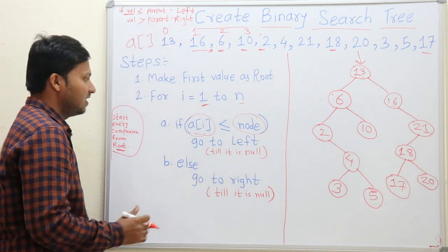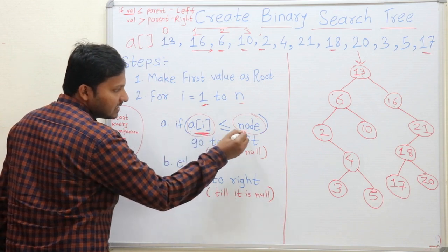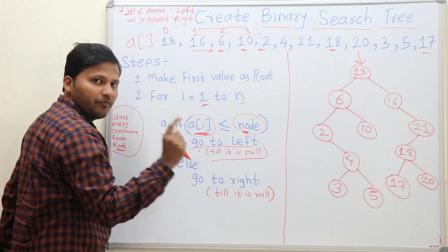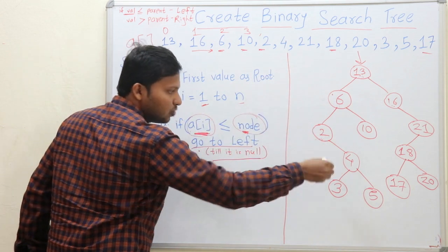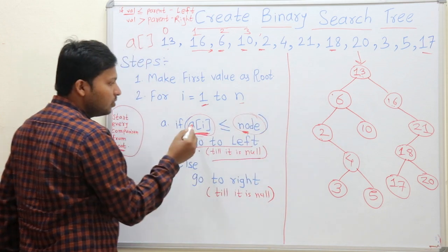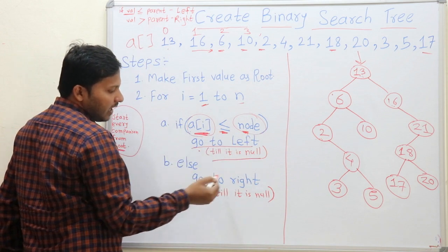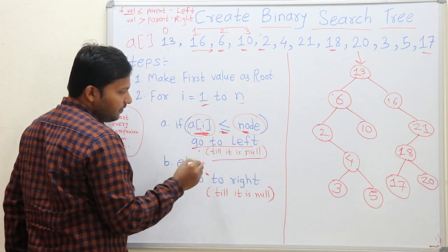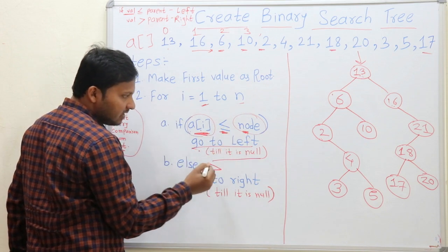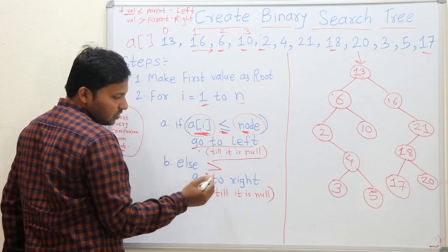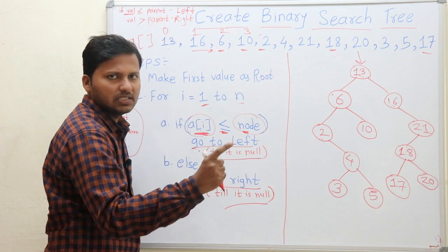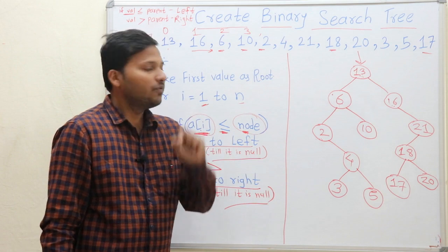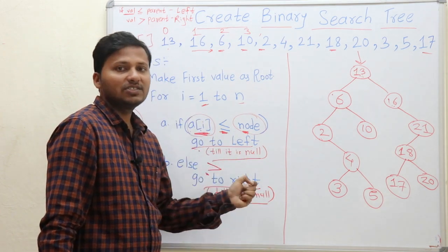This is how we make a binary search tree. If the element is less than or equal to the node, you go left until that place is null. If it is greater than the node, you go right until you find the null place to keep that element. In our next video, we will see the code to prepare a binary search tree in detail.